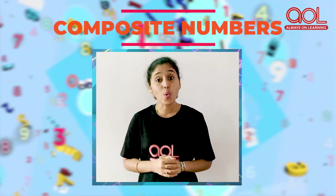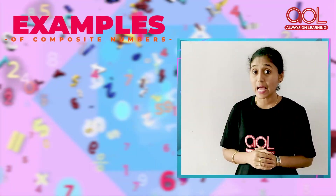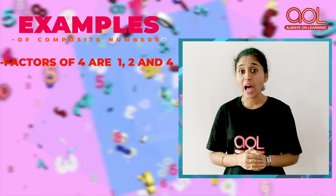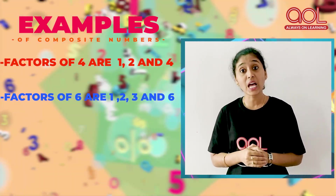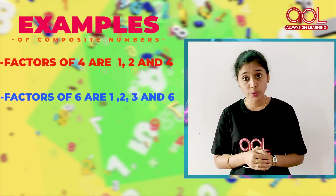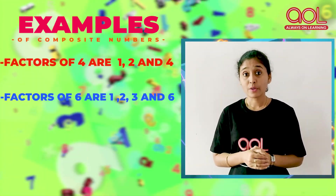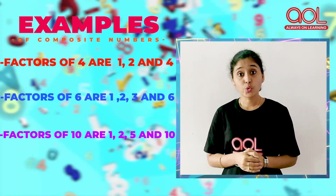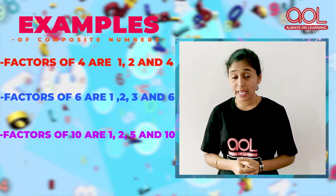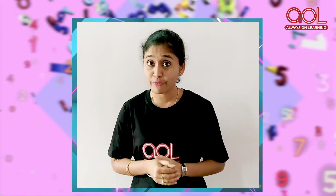Now, let us speak about composite numbers. What are composite numbers? Here come examples. Factors of 4 are 1, 2, 3 and 4. Factors of 6 are 1, 2, 3 and 6. Factors of 10 are 1, 2, 5 and 10. All these examples have more than two factors — maybe 3 factors, 4 factors, 5 factors and so on. Composite numbers are the numbers which have more than two factors.